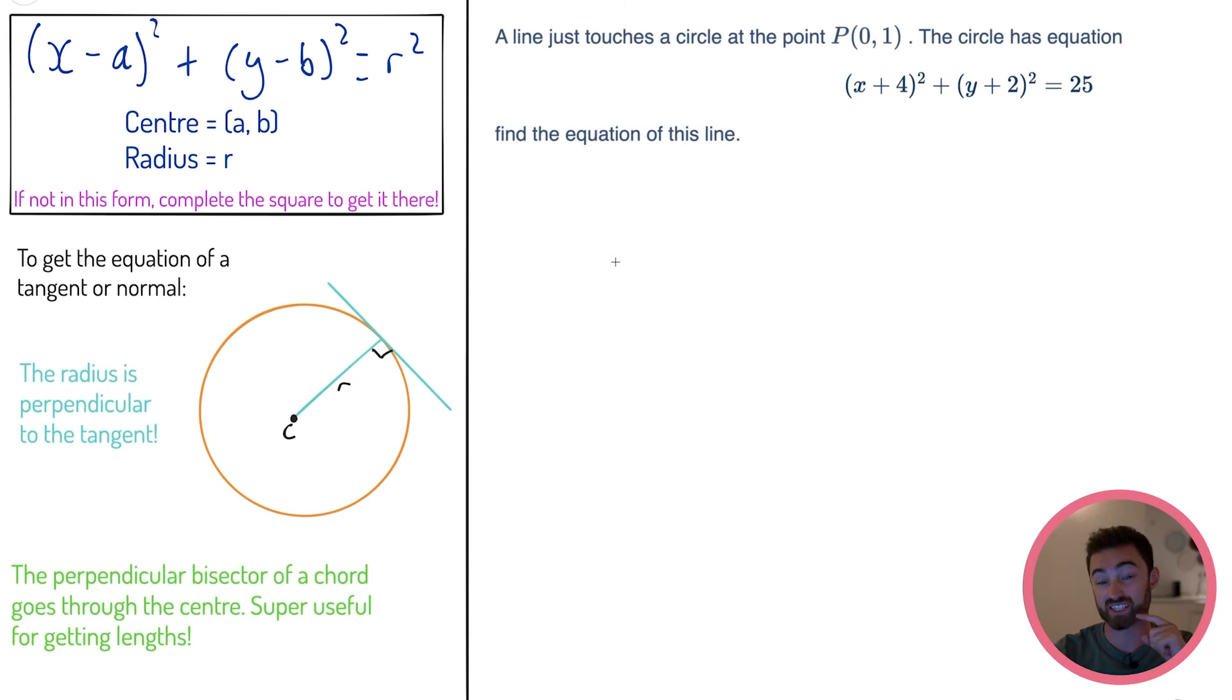In my opinion, the second most important thing is the following: the radius is perpendicular to the tangent. This is a circle theorem you learn in GCSE, but it is used all the time in A-level, and it will help you so much with getting the equation of a tangent or normal to the circle. This is a tangent here - a line that just touches the circle and then goes off in either direction.